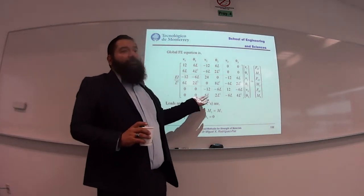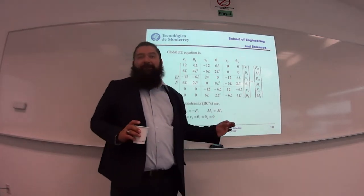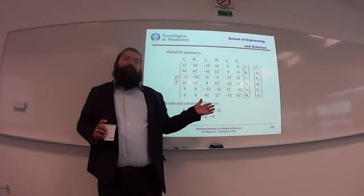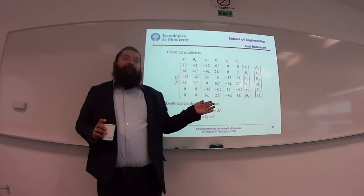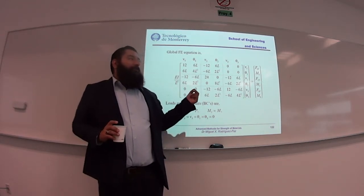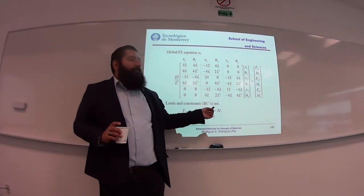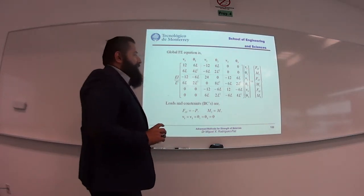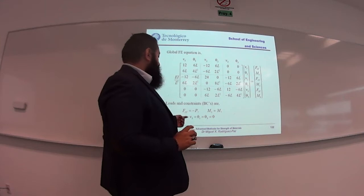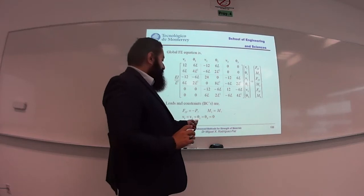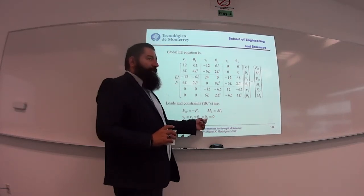Since we don't have distributed loads, we can recover the exact solution using those two elements. When we have distributed loads — and this is like a recipe from your grandmother — you need to put more elements because distributed loads are approximated to the nodes. But since we have only concentrated or punctual loads and a point moment, we don't need more nodes.